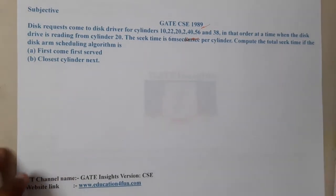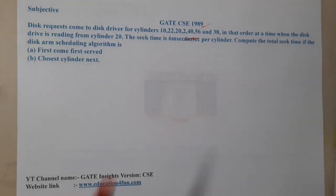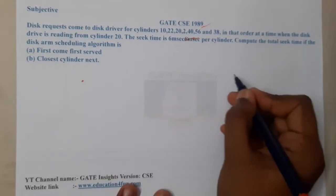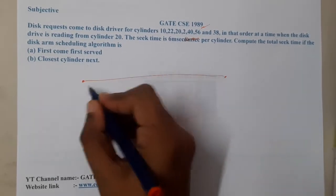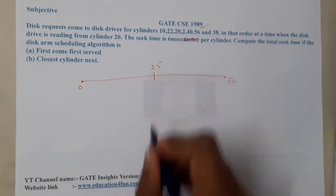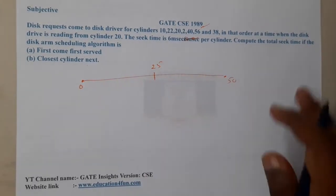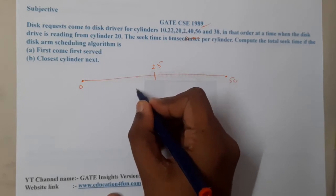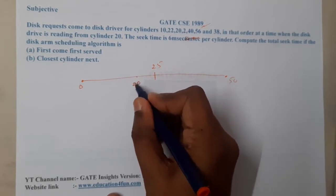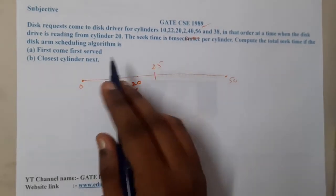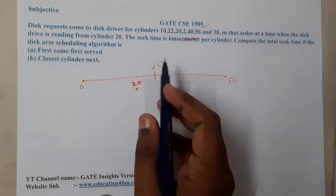Let's start solving. They did not give the maximum length, so for our understanding let us assume it is 50, so the range is 0 to 50. We start at cylinder 20. For First Come First Serve, we go to whoever came first.